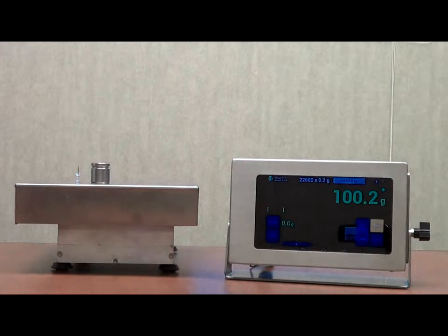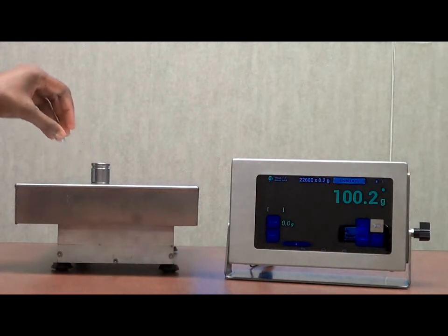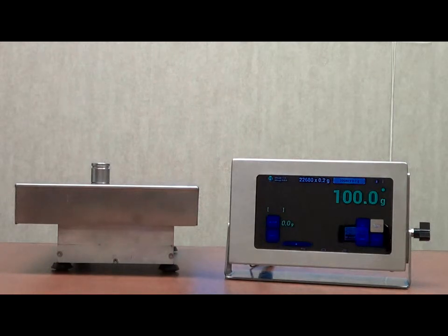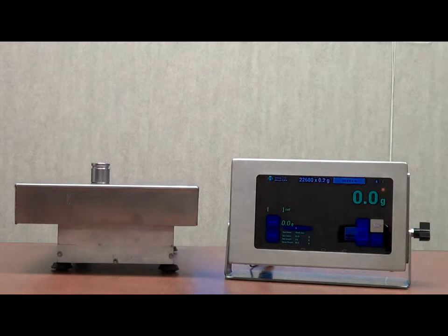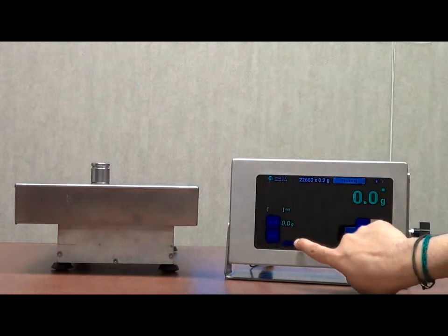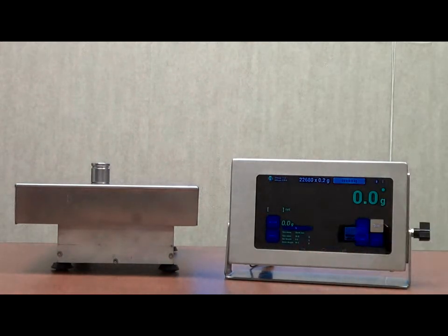There is a tare function, wherein we can remove the weight of an item that's already on the scale. I'm going to demonstrate that now. Go to tare, and now it's stabilized. So now even though there is a weight on there, it is not registering because we tared the weight out.